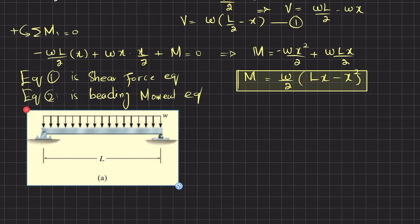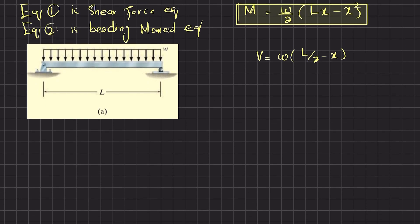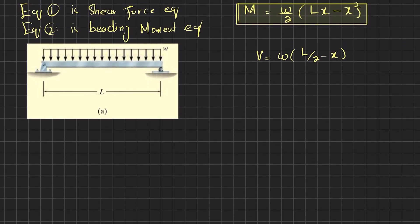We now have both equations — Equation 1 is the shear force equation: V equals w(l/2 minus x), and Equation 2 is the bending moment equation. To draw the shear force diagram, I will draw horizontal and vertical lines from the ends of the beam.